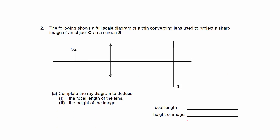The following shows a full-scale diagram for a thin converging lens to project a sharp image of an object O on the screen S. You need to pick out keywords — in this case, 'sharp' means that the image is actually at the screen. So it gives you the location of the image, just not how tall. The question asks you to complete the ray diagram to deduce the focal length of the lens and the height of the image.